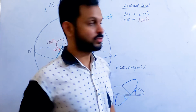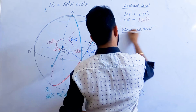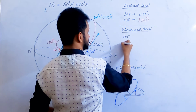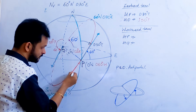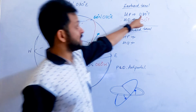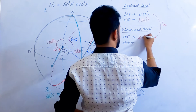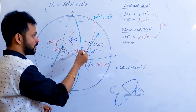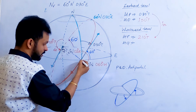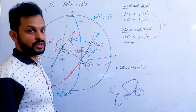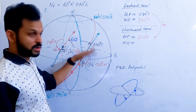Now let's do the same thing for westward travel. Once you get the eastward travel, westward travel is actually easier. For westward travel at P, it will be opposite to 30 — so 180 plus 30, which is 210 degrees true. If you want to measure it clockwise from the local meridian to this particular opposite track — this is the westward travel — therefore the track at P is 210 degrees true.